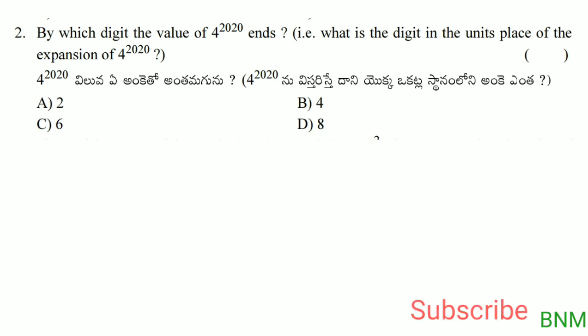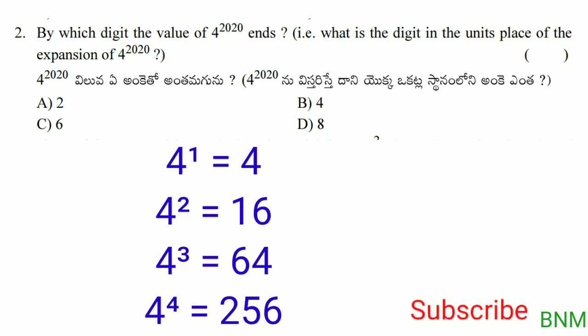Next bit: by which digit does the value of 4 to the power of 220 end? That is, what is the digit in the units place of 4 to the power of 220? Since 4 raised to an even power always ends in 6, the units place is 6. That is the right answer.